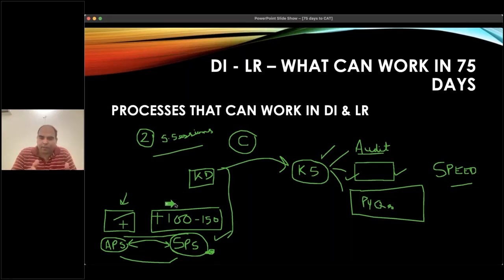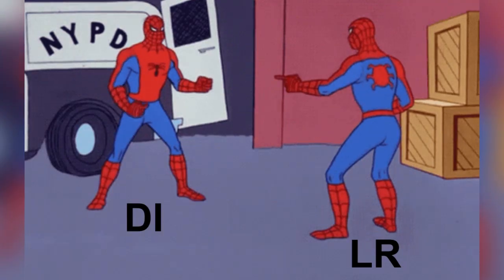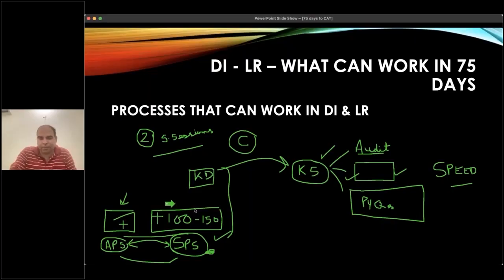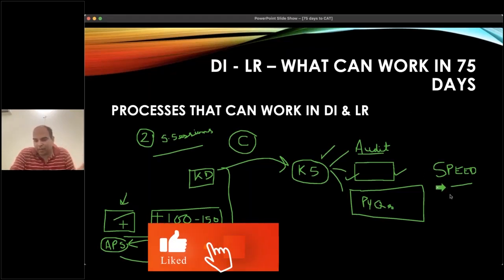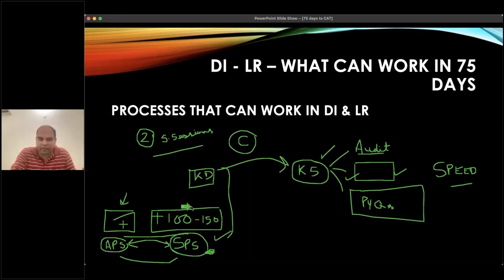Whether you are ability deficient or ability sufficient in DI and LR, pick up 150 sets. In CAT, you often can't even tell whether you're doing DI or LR — everything is mixed. Give yourself a target of 100 to 150 sets. Are you solving for learning because you are ability deficient, or for speed? If for speed, push yourself with a 10-minute time limit. If ability deficient, first don't set a time limit — do 100 to 300 sets. At 10 sets per day, in 10 days your DILR can change and improve. 75 days is a huge amount of time.